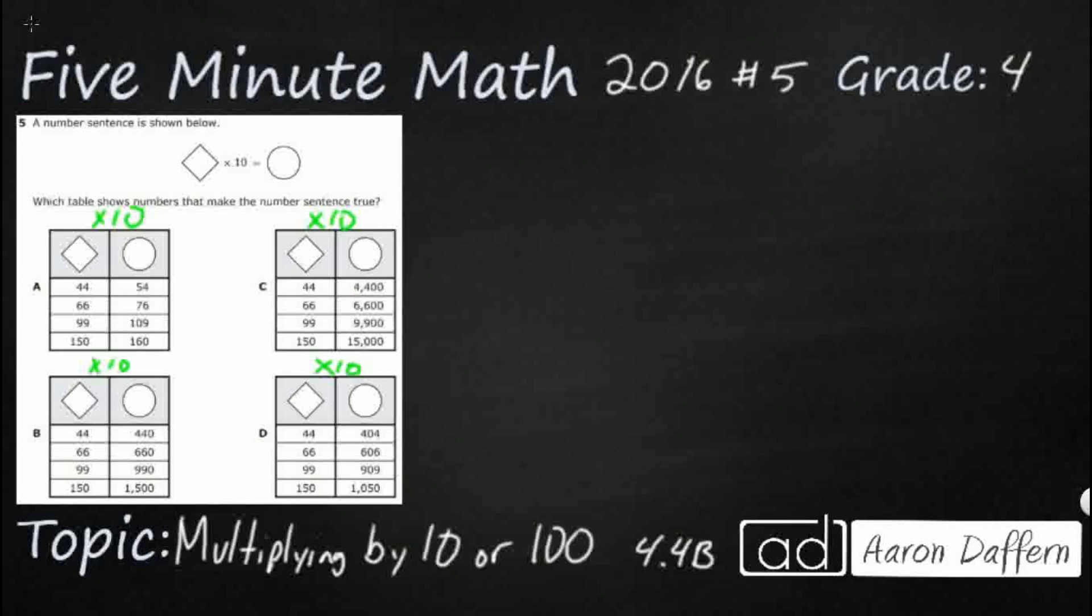There is a really easy way to figure this out, and we will make sure we get to that by the end of the video. But let's start by going the slow way here. I want to start with the first square number in each of these answer selections, multiply that by 10, and simply see whether that comes to our circle.